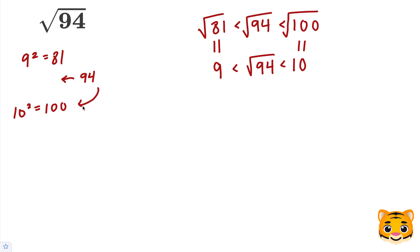However, 94 is closer to 100 than it is to 81, so the square root of 94 will be closer to 10 than it is to 9. So let's pick a tenths place decimal closer to 10, such as 9.7, and let's see what 9.7 squared is and if it's close to 94.